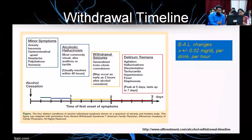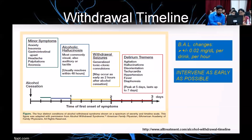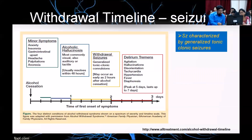Blood alcohol changes tend to be around 0.02 mg per deciliter per drink per hour. This is why even if somebody reduces their alcohol intake, they may still go into withdrawal. The key is to actually intervene as early as possible — we want to intervene when the symptoms are minor, not when symptoms are more severe.